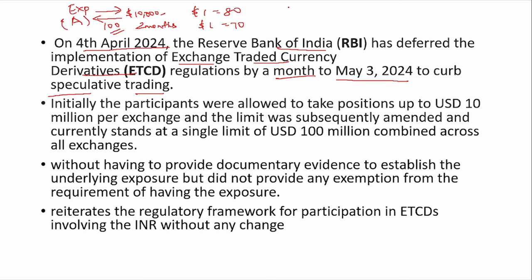Similarly, there is an opposite scenario — an importer gives an order of 100 mobile phones from a manufacturer outside India, worth $10,000 to be delivered after 2 months. This importer knows $1 is currently 80 rupees and worries: what if $1 becomes 90 in the future? In that case, he would have to pay 9 lakhs instead of 8 lakhs. So, let this be B. Now A and B get into a contract.